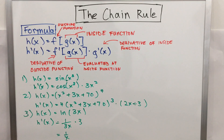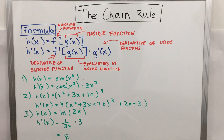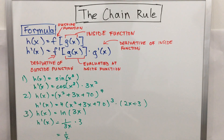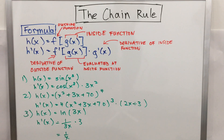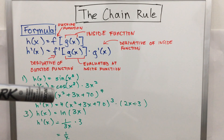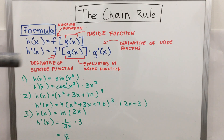Example number two: h(x) = (x² + 3x + 70) raised to the exponent 4. Using the formula, h'(x) = 4 times (x² + 3x + 70) to the exponent 3, multiplied by 2x + 3.